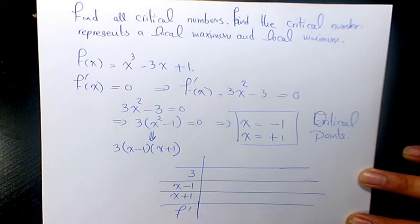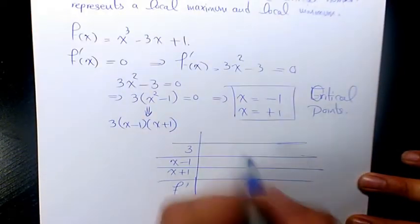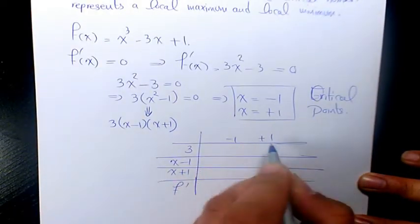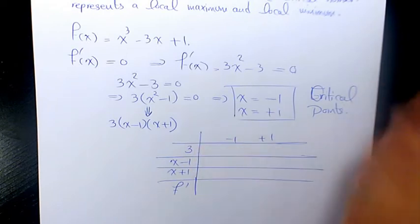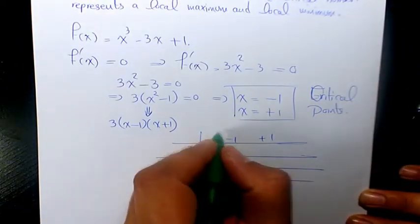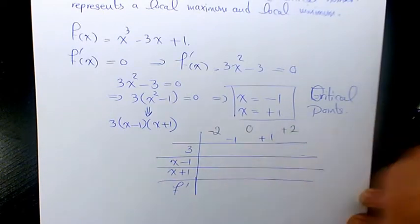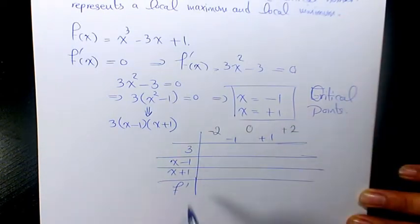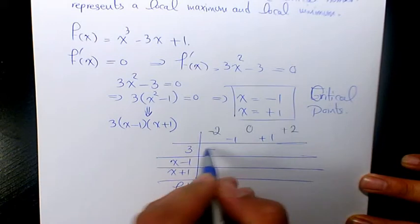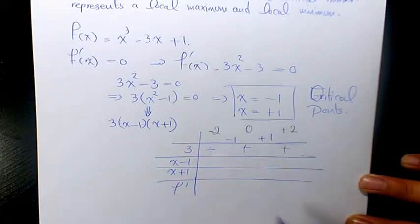We have negative 1 and positive 1, which divides the whole thing into three different regions. If we assume some numbers for each region: negative 2 here, 0 here, and positive 2 here, we can find out the sign of each part. 3 is not changing with x values; it's always positive because it's positive 3.